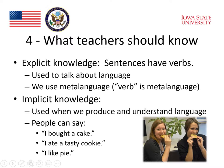Second, there's implicit knowledge. That's the knowledge that's used when we produce and understand language. People can say 'I bought a cake,' 'I ate a tasty cookie,' or 'I like pie.' All of those sentences can be said without being able to name which word in the sentence is a verb. You can use language knowledge without having explicit language knowledge to talk about the language.